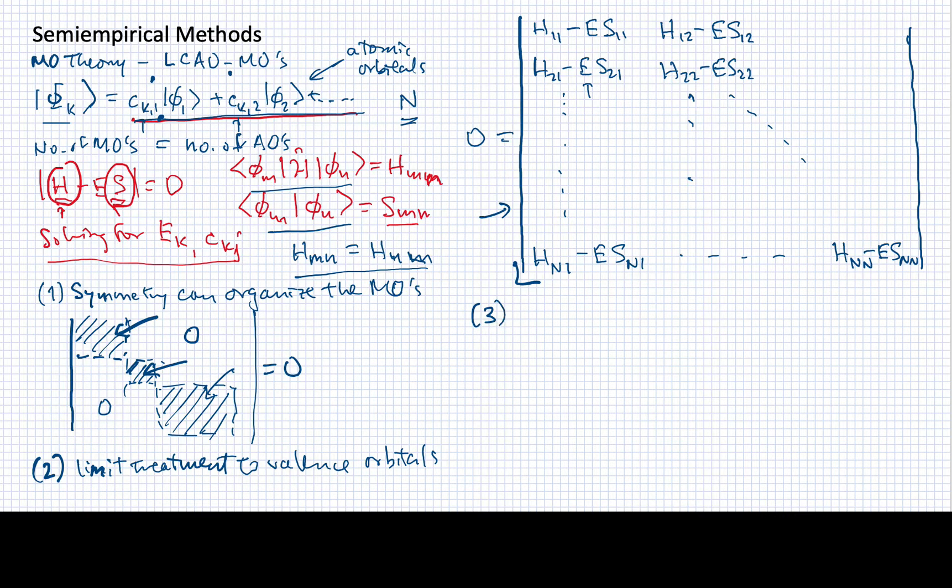A third thing we can do to simplify this problem is we can neglect the overlap between different atomic orbitals. This has the acronym NDO, Neglect of Differential Overlap. When you think about it, if two atomic orbitals are on the same atom, they are orthogonal already, so this isn't an approximation at all.